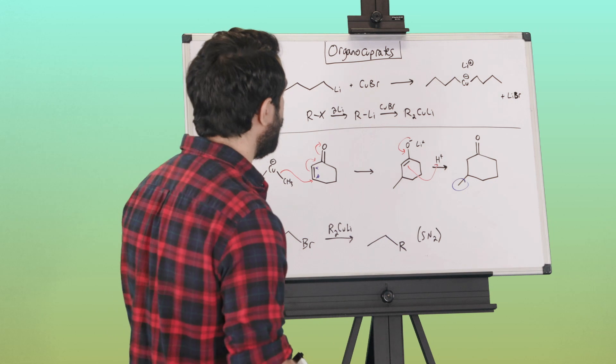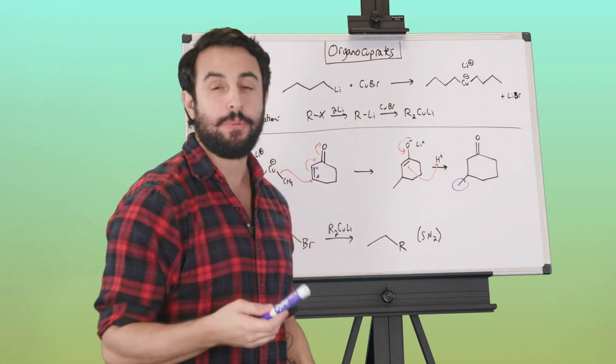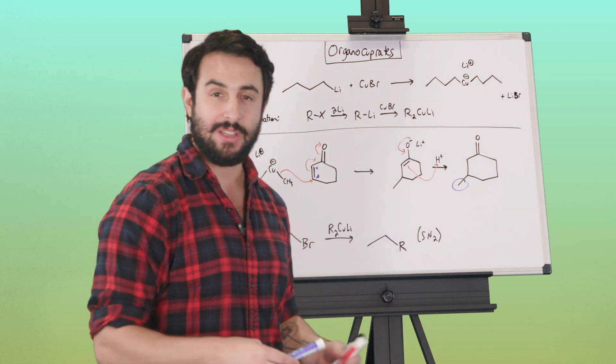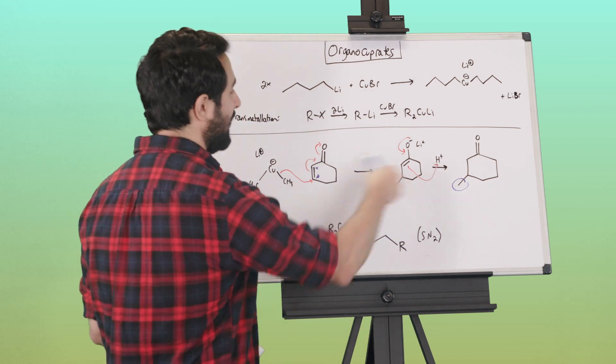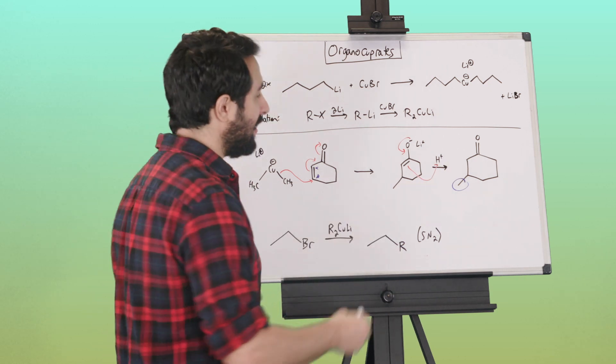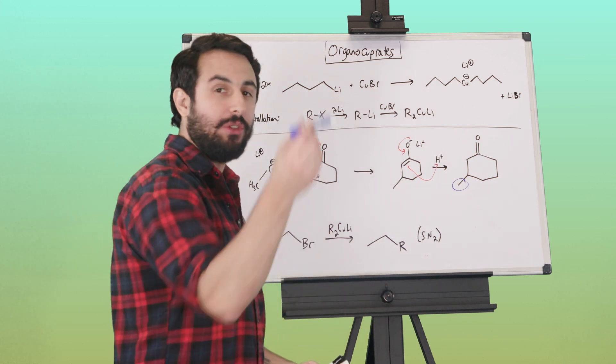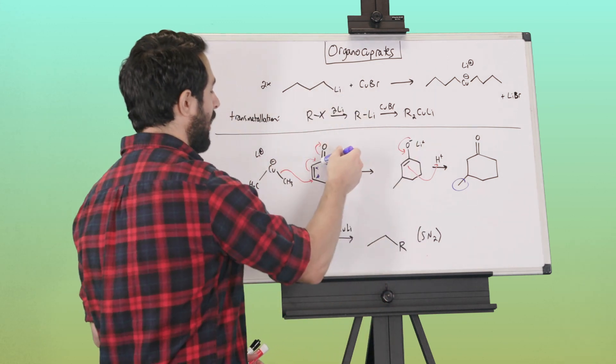That is also the primary purpose of using organocuprates: this conjugate addition. It's a 1,4-addition rather than 1,2 with Grignard or organolithium, which would attack right there.